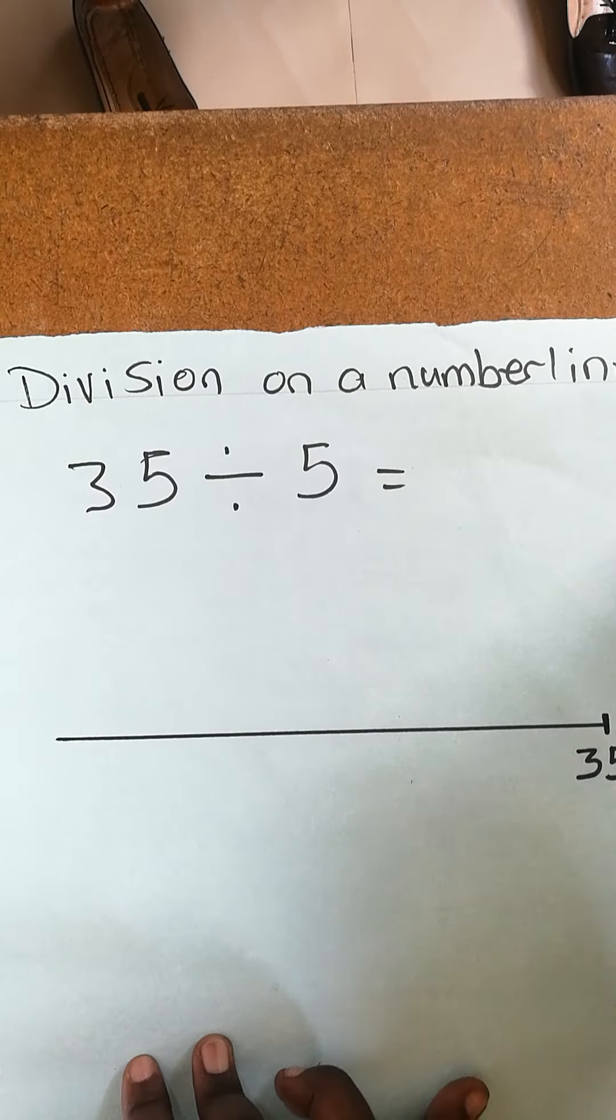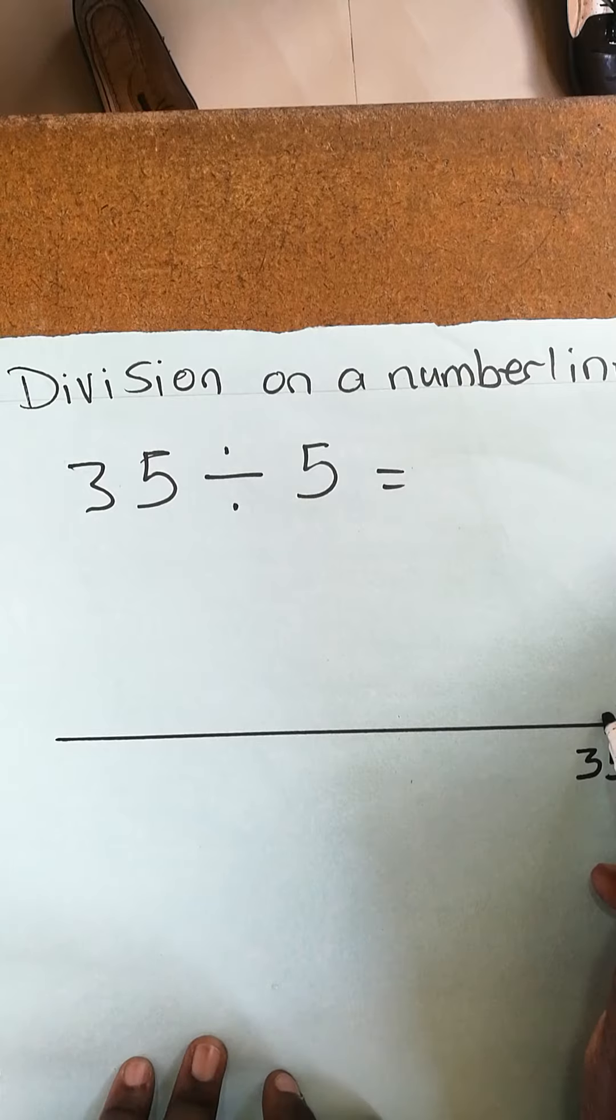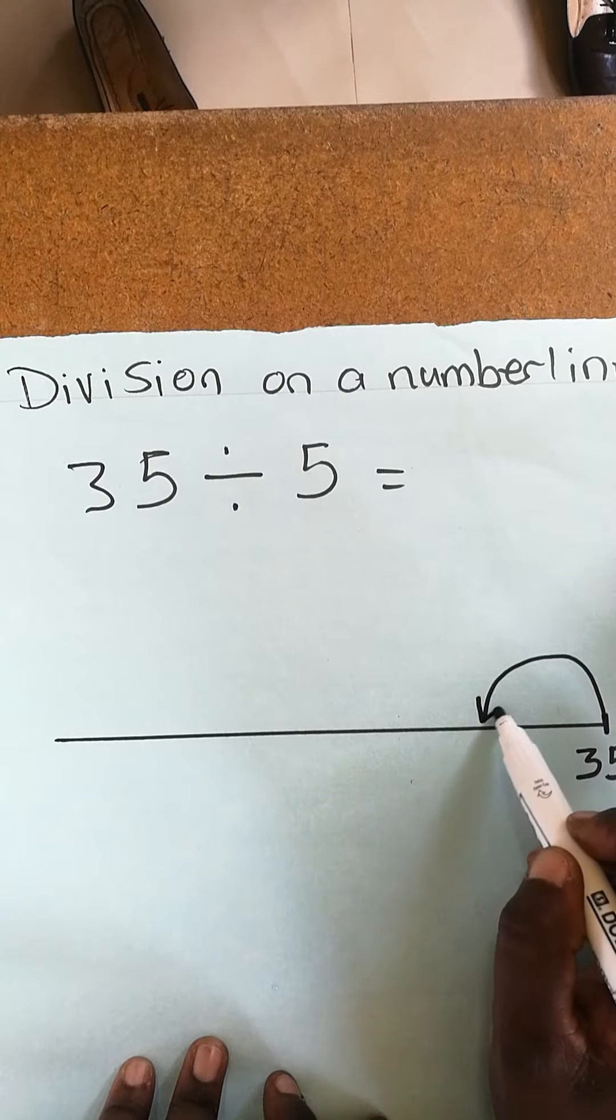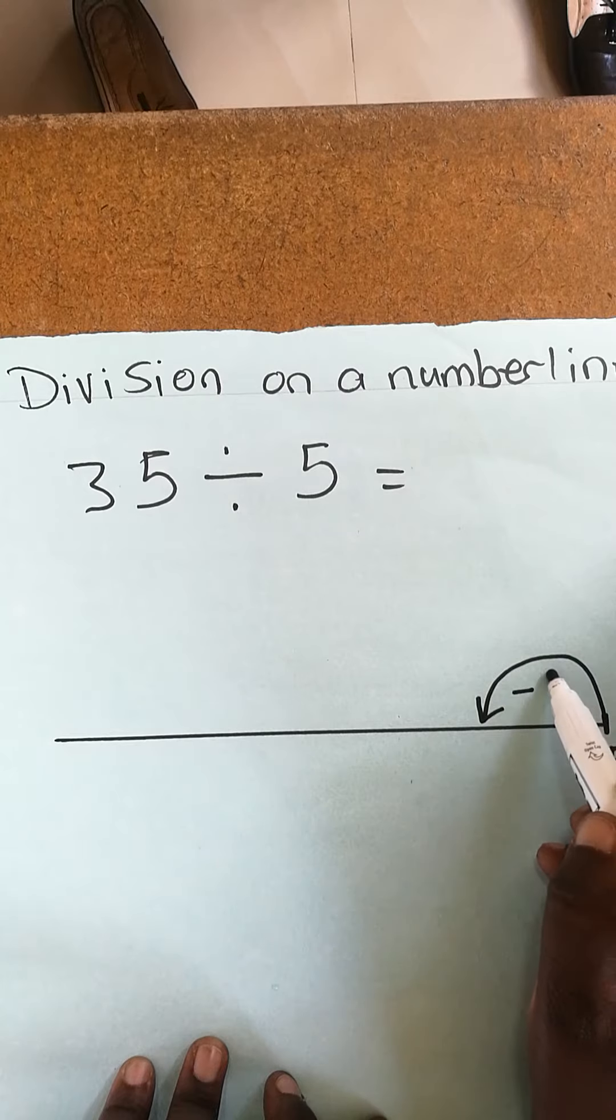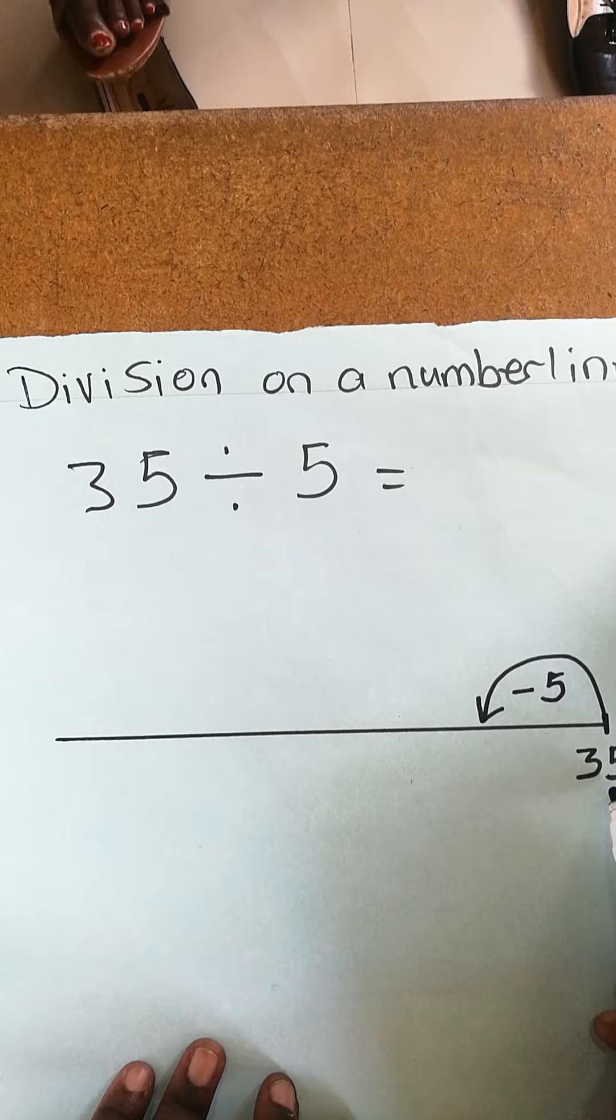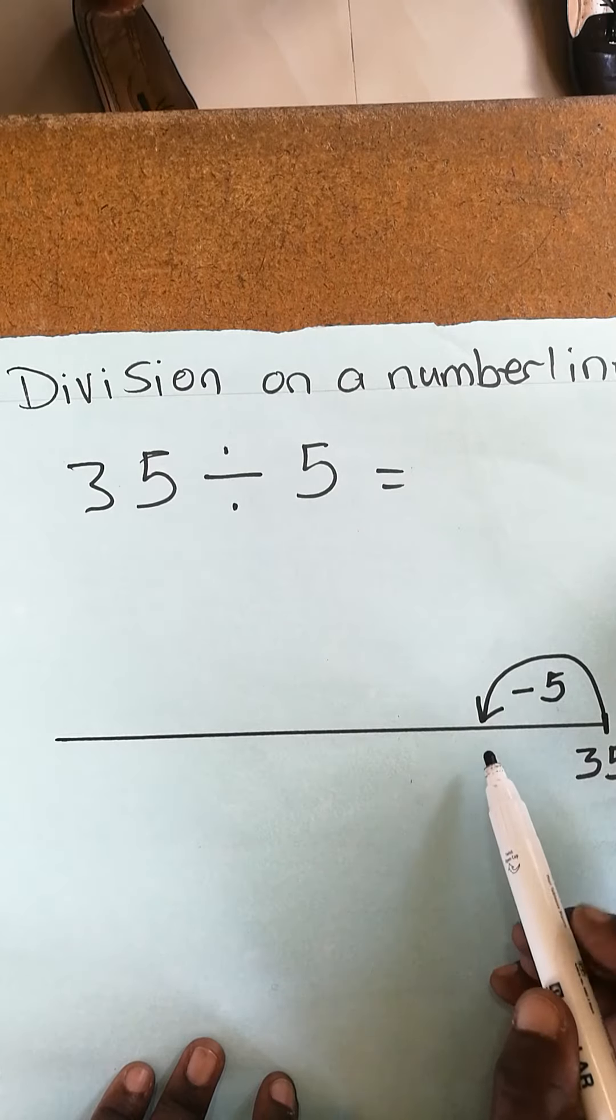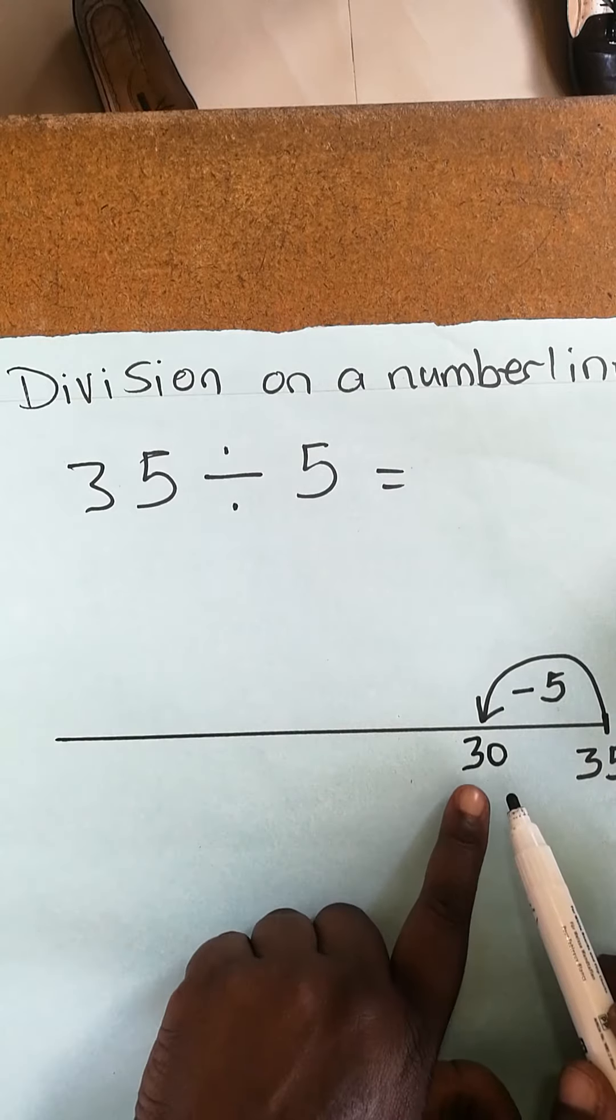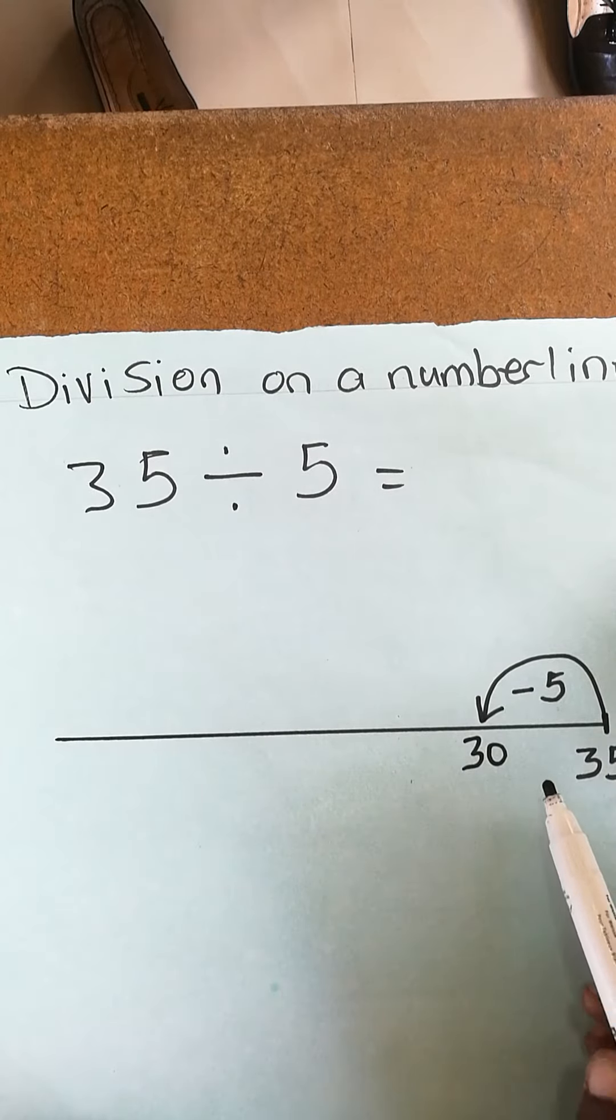Going to be grouping into 5 backwards. So you make a jump backward and take away 5. If you take away 5 from 35, counting backwards is going to be 30. You're not yet at zero, you still go on.